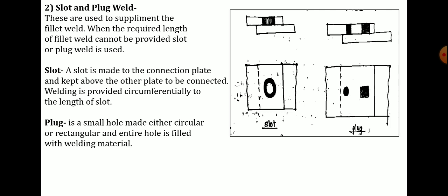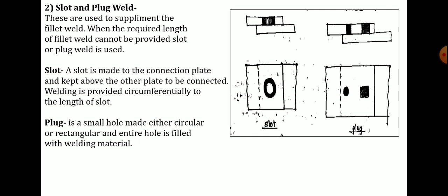Next is slot and plug welding. These are used to supplement fillet welding when the required length of welding cannot be provided. In slot welding, the slot is made in the connecting plate, placed above the other plate, and welding is provided circumferentially along the length of the slot — not for the entire slot area. In plug welding, the hole made in the connecting plate — either circular or rectangular — is completely filled with welding material. These are adapted only when the required length of welding cannot be provided.